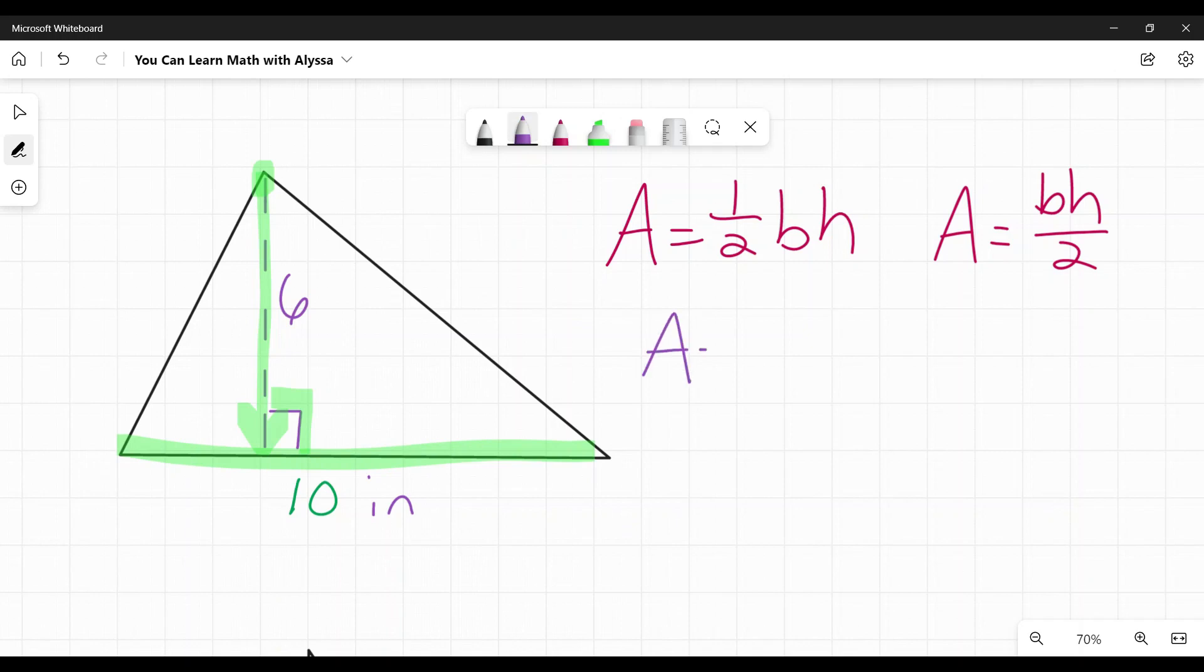So in this case area would equal one half times the base which is 10 inches and the height which is 6 inches. One half times 10 is 5, 5 times 6 is 30, and we would finish it with inches squared.